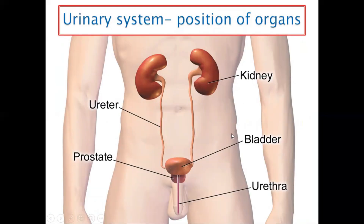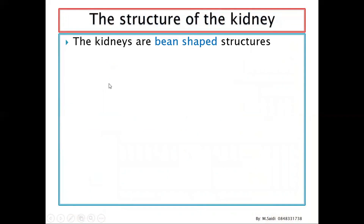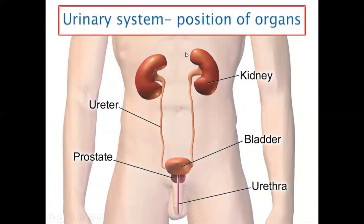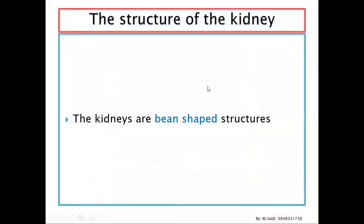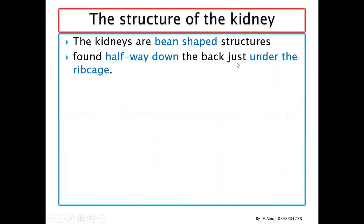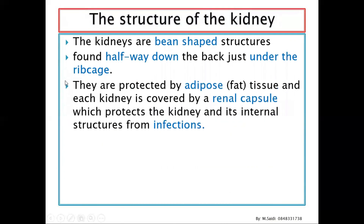The kidneys are bean-shaped and located from halfway down the back, just below the rib cage — one slightly higher than the other. The tubes connecting the kidneys to the bladder are the ureters, and the tube from the bladder to outside is the urethra. The kidneys are protected by adipose tissue — a layer of fat that also stores energy.